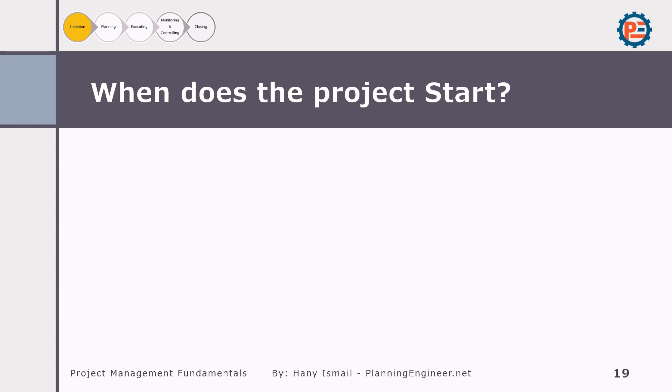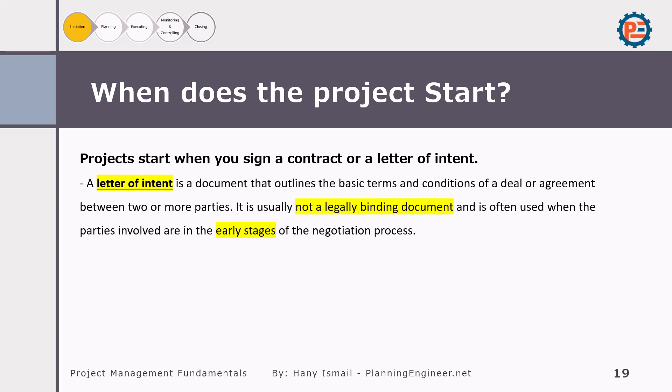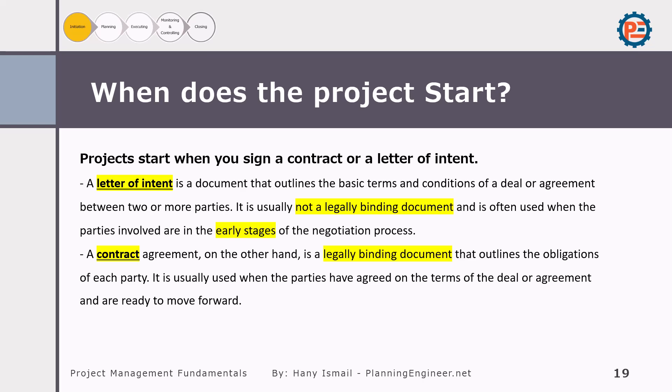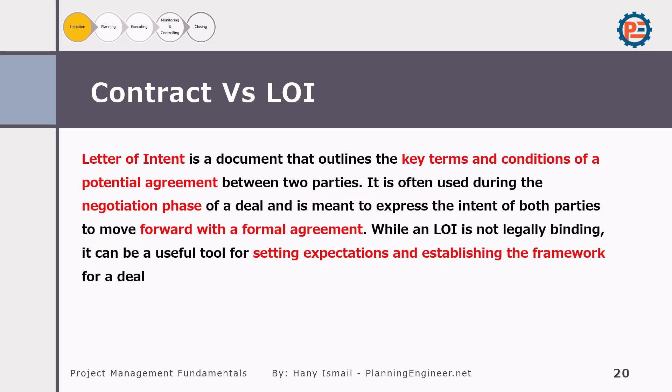The final stage of the tender process is contract signing, when the client signs a formal construction contract with the awarded bidder. At this point, all parties should be clear on their roles, responsibilities, and obligations. A project officially starts when you sign a contract or Letter of Intent. An LOI is a document that outlines the basic terms of a deal, often used during early negotiations, and is not legally binding.